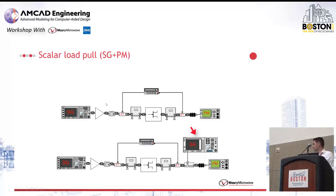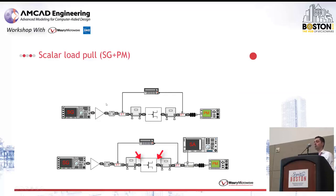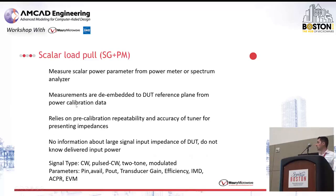A very important aspect of scalar systems is that since you're measuring power at a given point, you need to know exactly what your tuner is doing. You need an accurate representation of your tuner in order to de-embed your measurements up to the device reference plane. This whole structure is based on pre-characterization of the tuner — you need to measure your tuner offline with a vector network analyzer. The accuracy is highly reliant on the S-parameters of the tuners and also on the repeatability of the tuner.